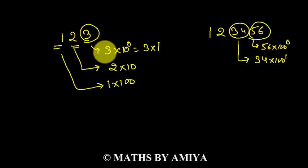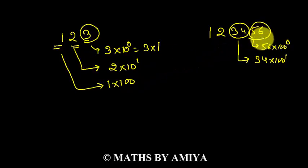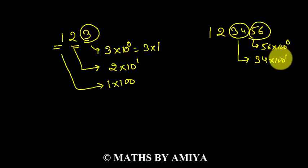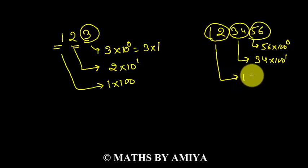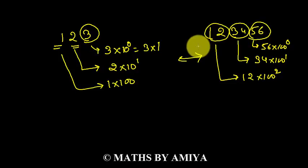The first bundle of 1 is 10 raised to power 0, the second bundle is 10 raised to power 1, and the third bundle is 10 squared, which is 100. Similarly, the first bundle of 2 is 100 raised to power 0, the second bundle of 2 is 100 raised to power 1, and the third bundle is 12 into 100 squared. Both are the same thing but we are changing the base — base 10 or base 100. We can also make base 1000 by bundling groups of 3.